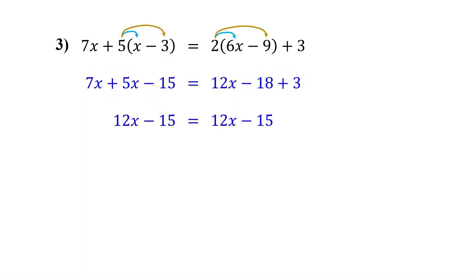Collect the variables on one side. Let's collect them on the left by subtracting 12x from both sides. Notice on each side, we have 12x minus 12x, which is 0. They cancel out. And we're just left with negative 15 equals negative 15.